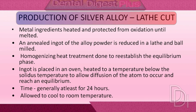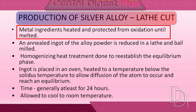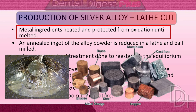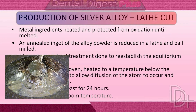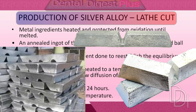Now, let's see how to manufacture lath-cut amalgam alloy. In order to make alloy powder, all the metal ingredients are heated and protected from oxidation until melted. After that, molten metal is cooled and formed into an ingot.